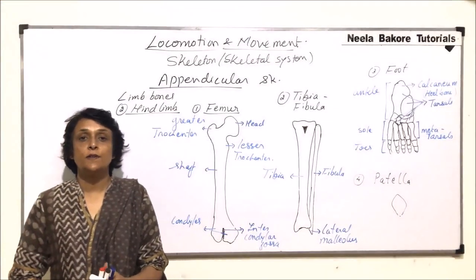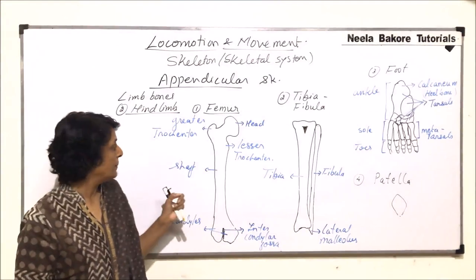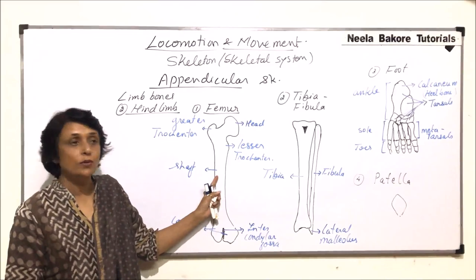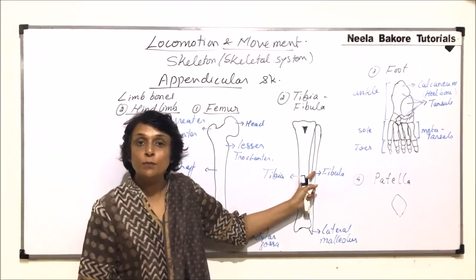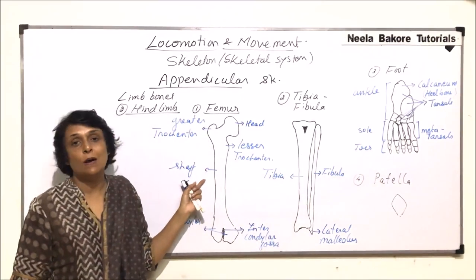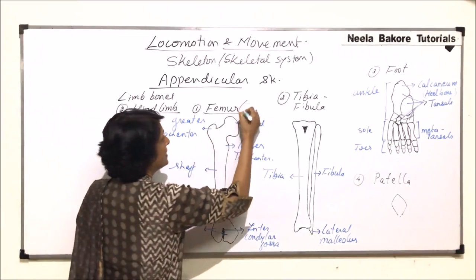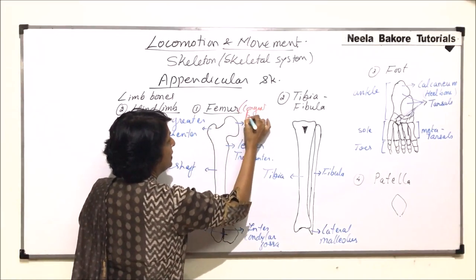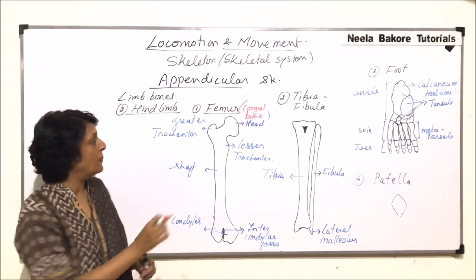In this part we will discuss the bones of the hind limb. Our hind limbs have the thigh bone which is the femur, then tibia and fibula, and the foot part. The femur, which is also known as the thigh bone, is the longest bone of our body and it is divided into three parts.